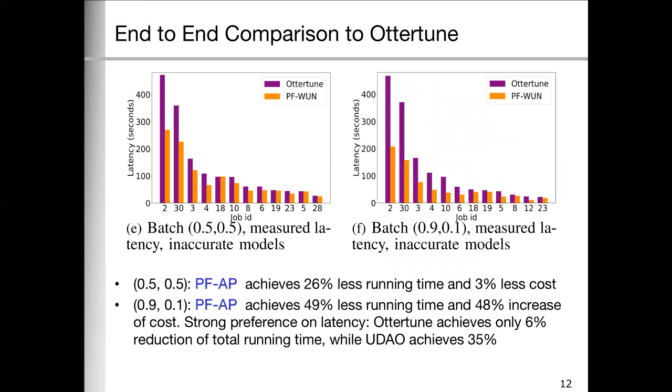Then we do the end-to-end comparison with Ottertune, which is a state-of-the-art performance tuning work. We summarize the results for 12 jobs with two different preferences. When the user has equal weight for the latency and cost, PF-AP achieves dominant performance, 26% less running time and 3% less cost. When the user has strong preference on latency, 9 to 1, Ottertune achieves only 6% reduction of total running time, while PF-AP is 35%. Overall, PF-AP uses more cost to achieve better latency performance. That is exactly the user desired.